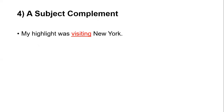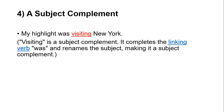The next function is gerund as a subject complement. 'My highlight was visiting New York' — visiting is a subject complement. It completes the linking verb 'was' and renames the subject, making it a subject complement. 'Was' is the linking verb here. Another case: 'My new hobby is running' — this is a subject complement because it gives more information regarding the subject.